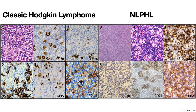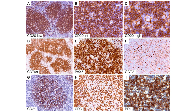In figure E, CD21 highlights the follicular dendritic cell meshwork within the nodule, which is a key feature of nodular lymphocyte predominant Hodgkin lymphoma. In figure F, the LP cells are characterized by rosetting of PD-1 positive T cells. This rosetting pattern can also be seen with CD57, but PD-1 is much better.